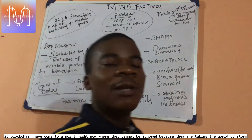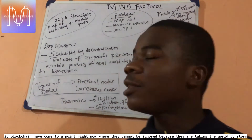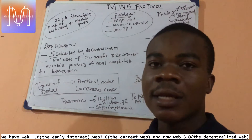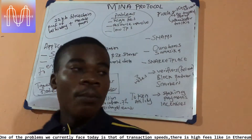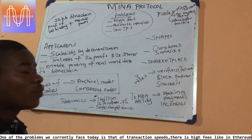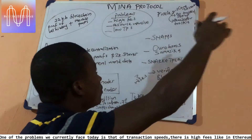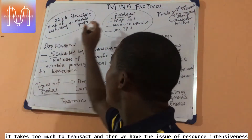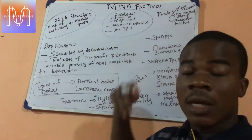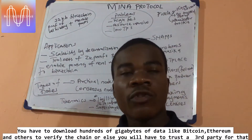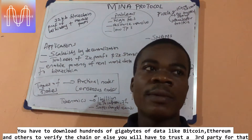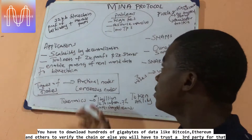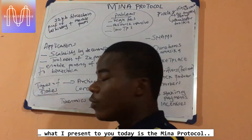Blockchains have reached a point where they cannot be ignored because they are taking the world by storm. We have Web 1.0, Web 2.0 which we are in now, and Web 3.0 with blockchain. One of the problems we currently face is the cost of transactions — there are high fees like in Ethereum. It is also very resource-intensive; you have to download hundreds of gigabytes, around 300 gigabytes, to verify the chain, or you have to trust a third party to do that for every single transaction.